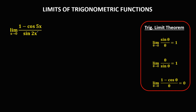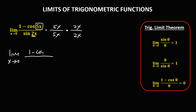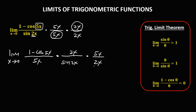For the last given, the angle in the numerator is 5x, so we need to multiply both sides by 5x. For the denominator, the given angle is 2x, so we need to multiply both sides by 2x. Simplifying, we get the limit as x approaches 0 of: 1 minus cosine 5x over 5x, times 2x over sine 2x, times 5x over 2x.